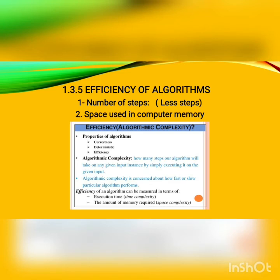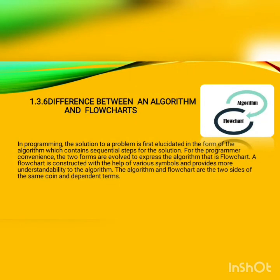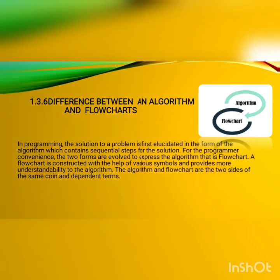Let's talk about the difference between an algorithm and a flowchart. In programming, the solution to a problem is first expressed in the form of an algorithm containing sequential steps. For the programmer's convenience, two forms are used: algorithm and flowchart. A flowchart is constructed with various symbols and provides more understandability to the algorithm. The algorithm and flowchart are like two sides of the same coin. The difference is just like the difference between a story and a movie — a flowchart is a graphical representation, while an algorithm writes the steps in a human-understandable language.